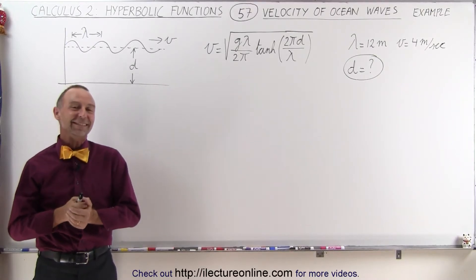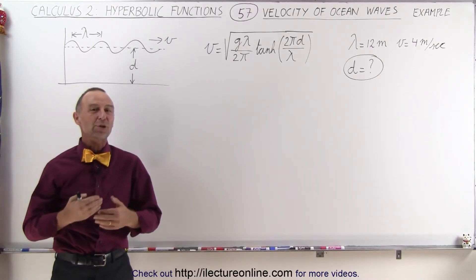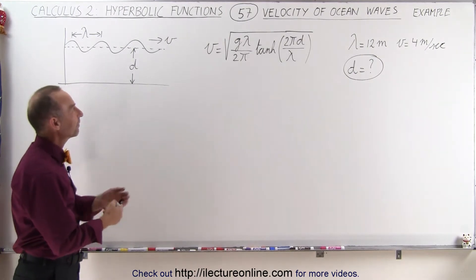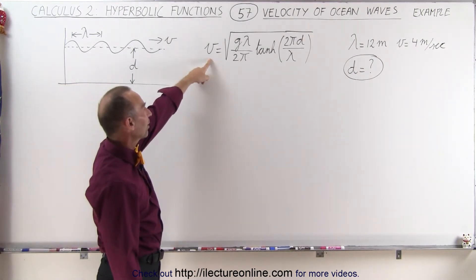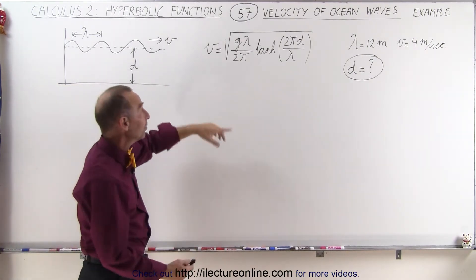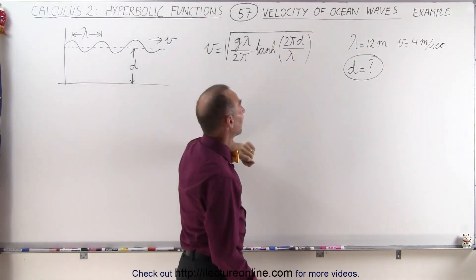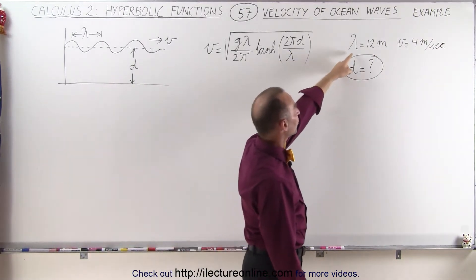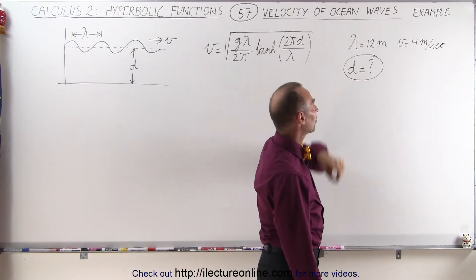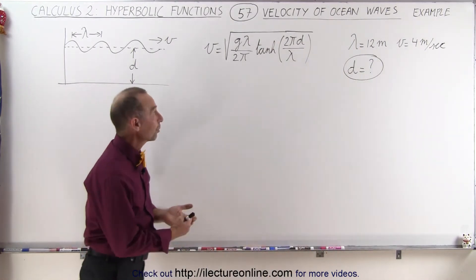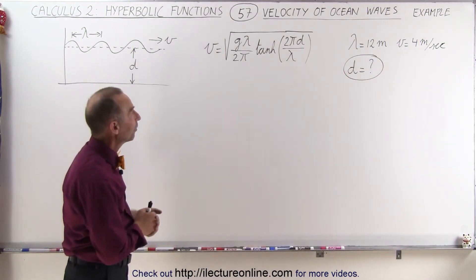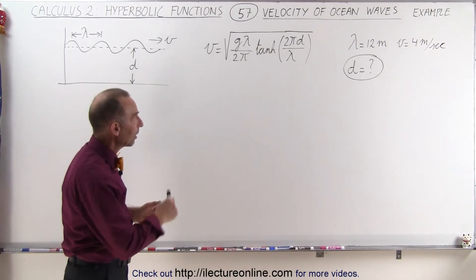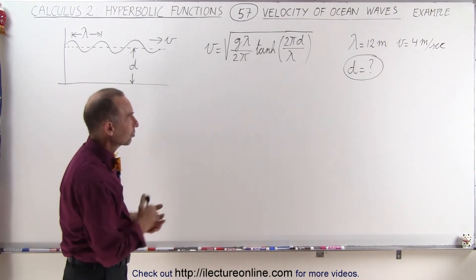Welcome to our lecture online. Now let's do an example with ocean waves. Here we're given the equation that describes the velocity of a wave, a water wave, depending upon the depth. We're given that the wavelengths are 12 meters long and that the velocity is equal to 4 meters per second. In this case we're supposed to find the depth of the ocean or the depth of the lake over which the waves are traveling.